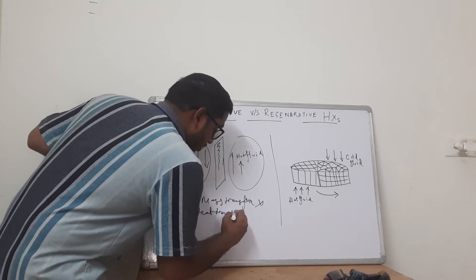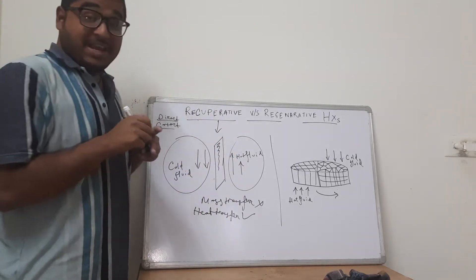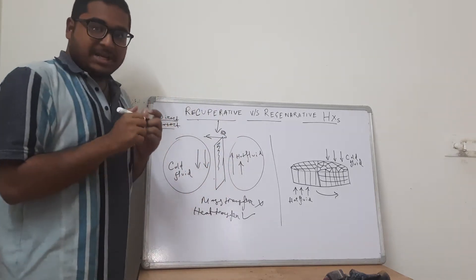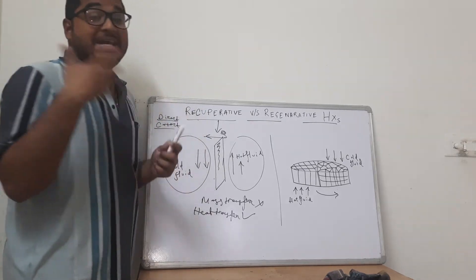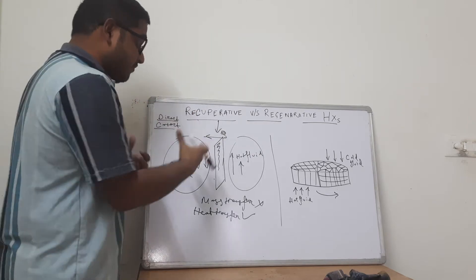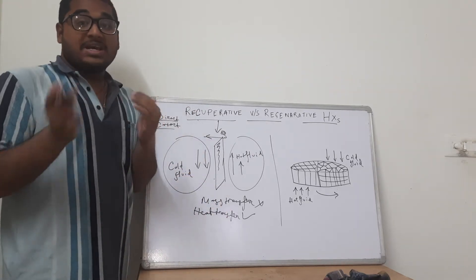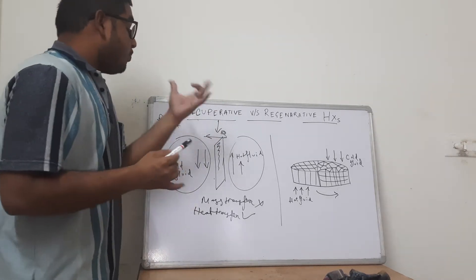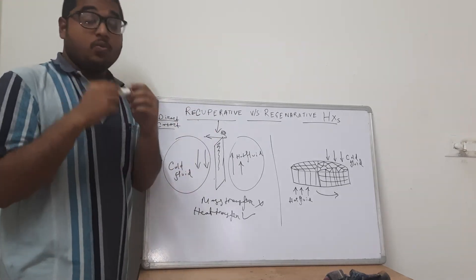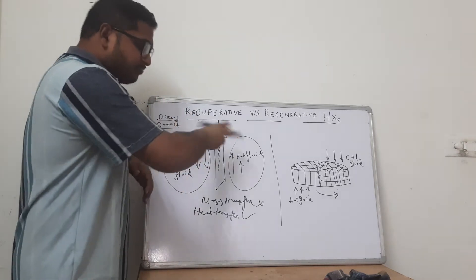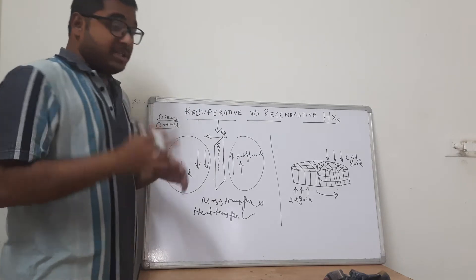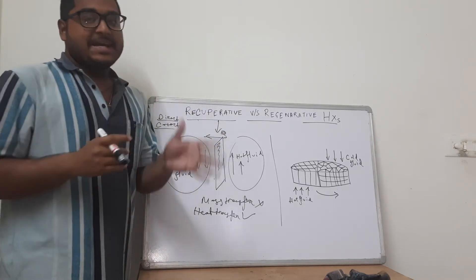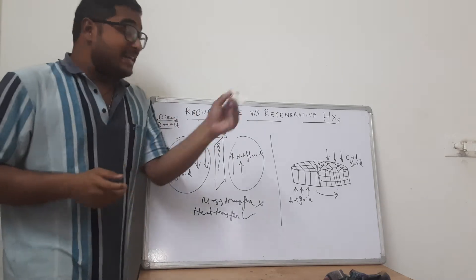In a recuperative heat exchanger, we must ensure that the conductivity of the plate is very high so that a large amount of heat can transfer from the hot fluid to the cold fluid. The heat transfer depends on the heat exchange surface. Direct contact heat exchangers are much more effective when it comes to heat exchange because there is no barrier. The definition of recuperative heat transfer is: a heat transfer method in which the hot fluid and the cold fluid flow simultaneously — anti-parallel or parallel — with the heat exchange surface in between, such that the hot fluid never comes in contact with the cold fluid and only heat exchange occurs.